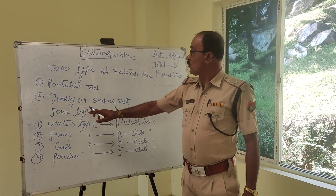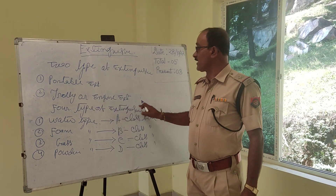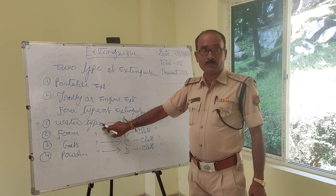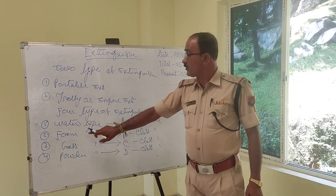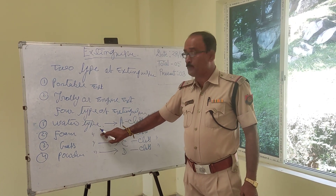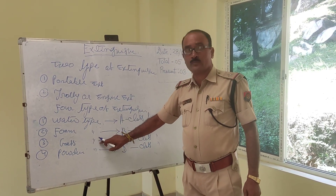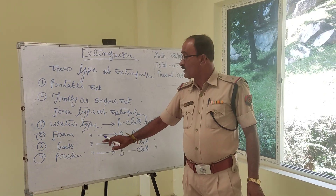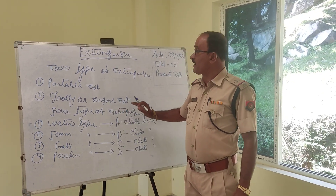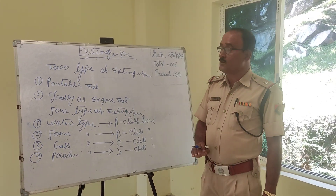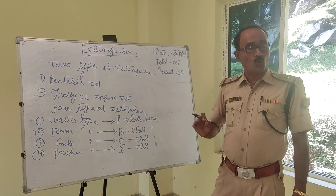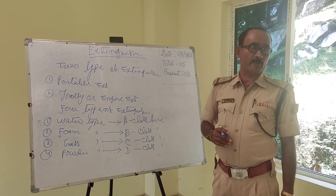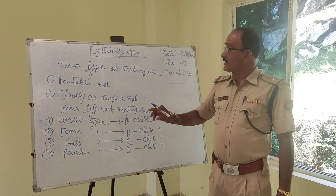So, this is the four types of the extinguisher: water type, home type, grass type, and other type. So this is the four types of extinguisher.